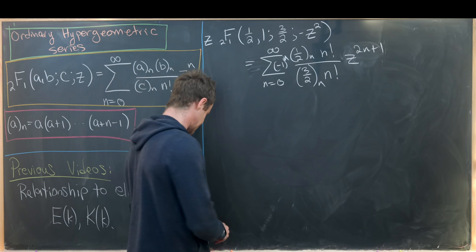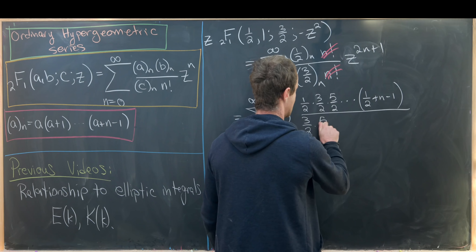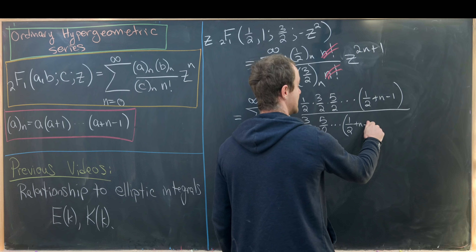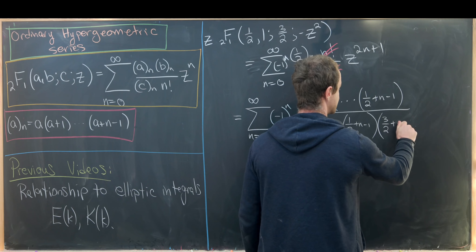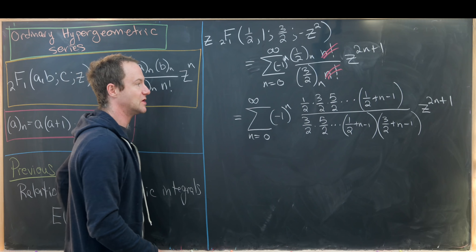We can cancel the two n! factors. Writing out the rising factorials explicitly: in the numerator we have (1/2)(3/2)(5/2)···(1/2 + n - 1), and in the denominator we have (3/2)(5/2)···(1/2 + n - 1)(3/2 + n - 1), followed by z^(2n+1). A large portion of terms cancel between numerator and denominator.